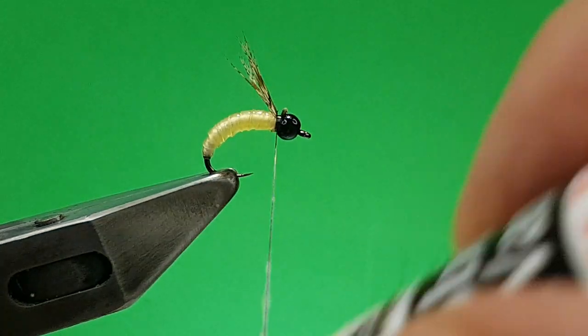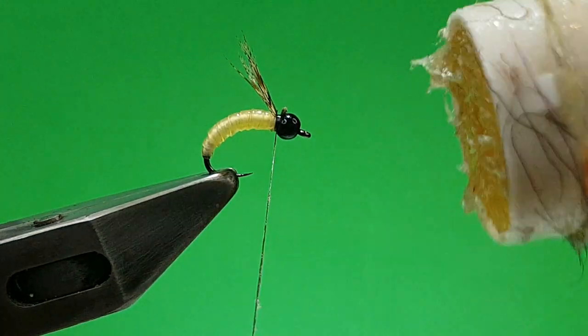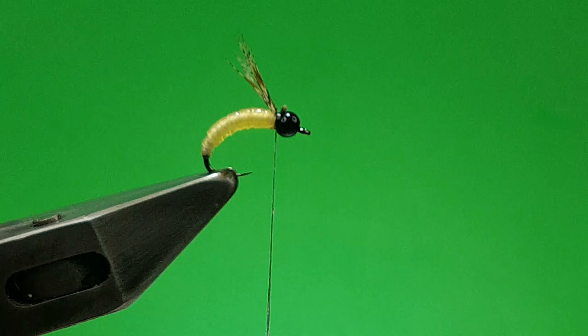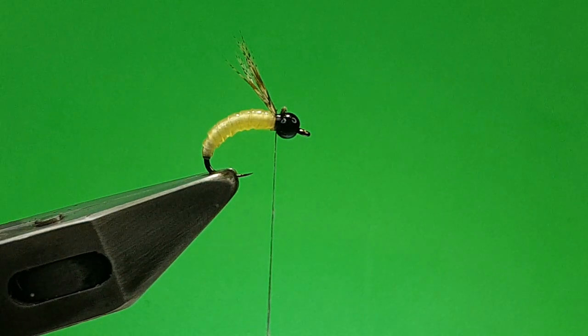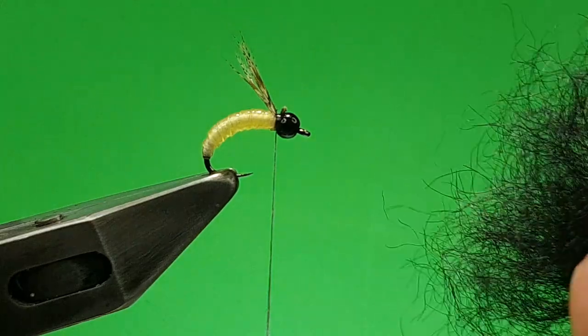Just kind of dab it onto your thread. Get a good amount on there, but if you've got any big lumps, obviously take that off. Then all you want, don't scrimp. You want a right good handful of dubbing. Tease it out a wee bit.